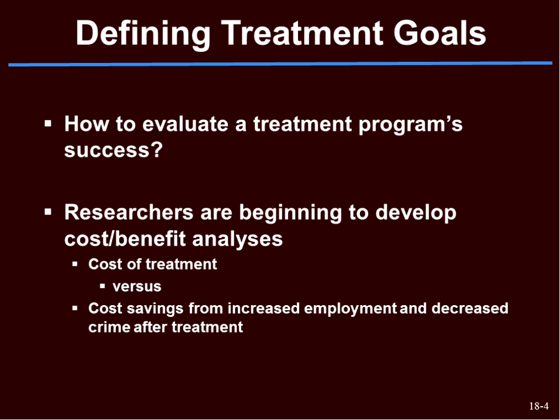We look at the cost of treatment — including the actual financial cost as well as the cost of missing work — versus the cost savings from increased employment and decreased crime after treatment. The idea is that if a person is successful in treatment, they'll be able to work, be part of society, and not go to prison.